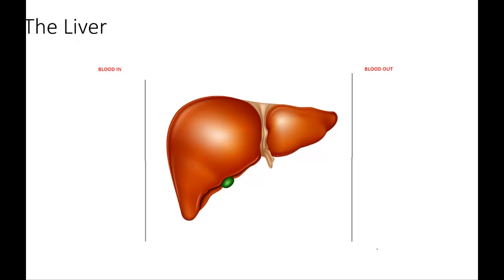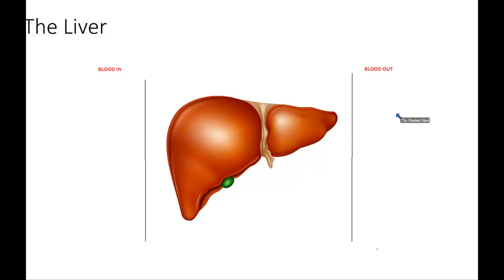Let us look at the liver. This is a diagram of the liver and we'll look at what is happening in the blood before it goes into the liver and what the blood is like after it passes through the liver. So first, glucose. Glucose is in your blood and when that glucose passes through the liver, the blood glucose level is adjusted.